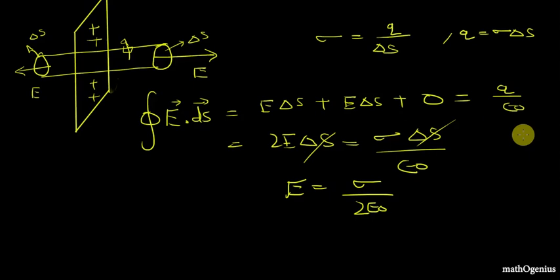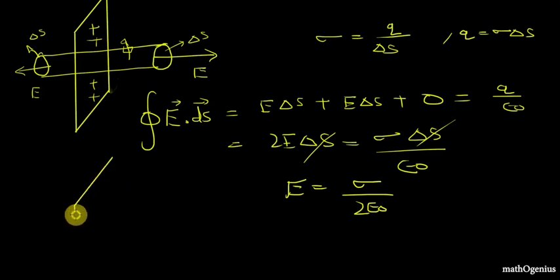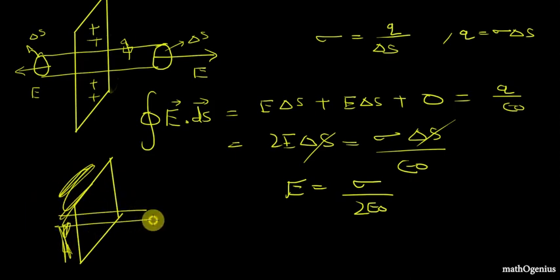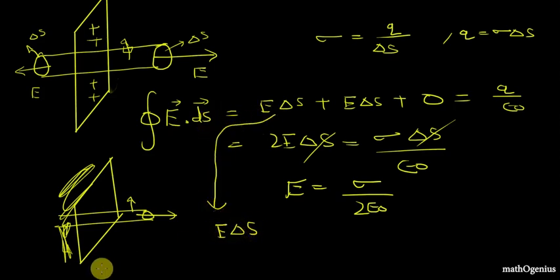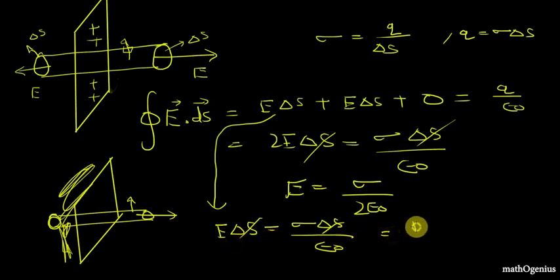Now we do it for a conducting surface. Note that there is no way to make a singly charged infinite plane conducting sheet. For a conducting surface we take a Gaussian cylindrical surface with only one end cap inside the material where the field is zero, so only one face contributes flux: EΔS = σΔS/ε₀, cancelling ΔS gives E = σ/ε₀, which is two times the result for a plain sheet.